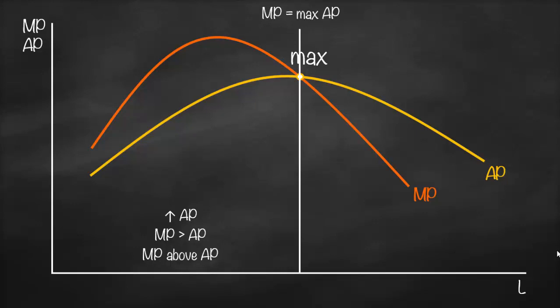Looking at the right side — the points after the maximum — average product is decreasing. If average product is decreasing, it means that marginal product will have lower values compared to average product. Consequently, marginal product will be below average product.